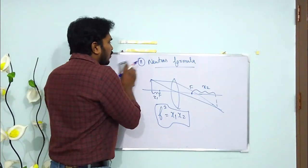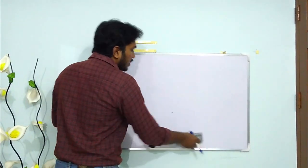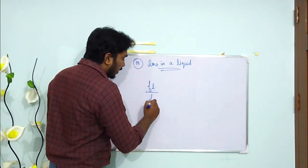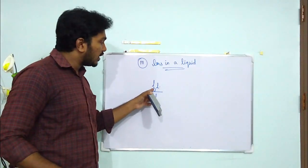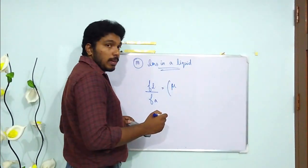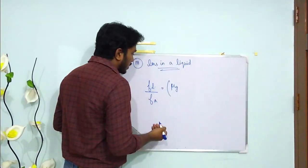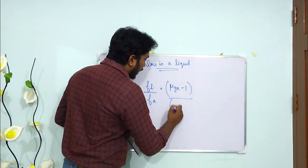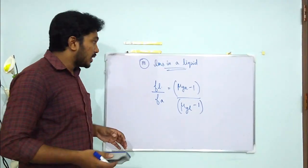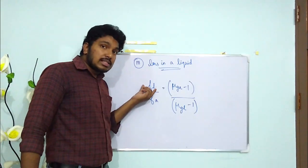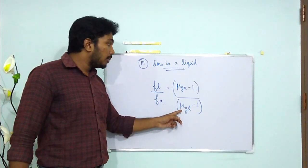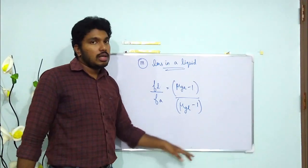The third condition covers what happens when a lens is immersed in a liquid. The focal length of the lens in liquid divided by the focal length of the lens in air equals (μ_glass/air − 1) divided by (μ_glass/liquid − 1). A simple memory aid: FL over FA equals μ_GL minus 1 over μ_GL(liquid) minus 1.